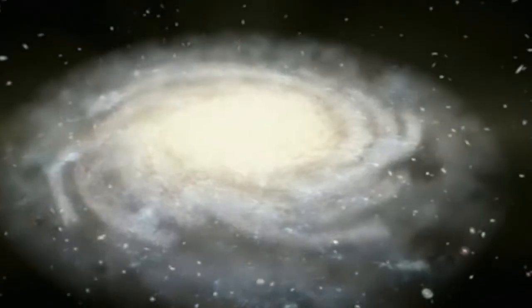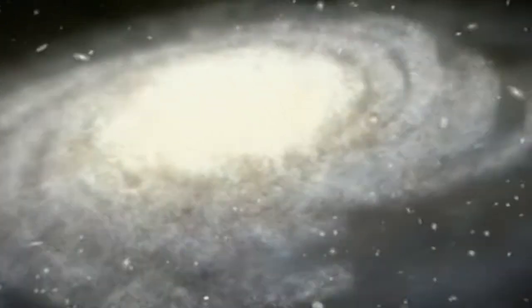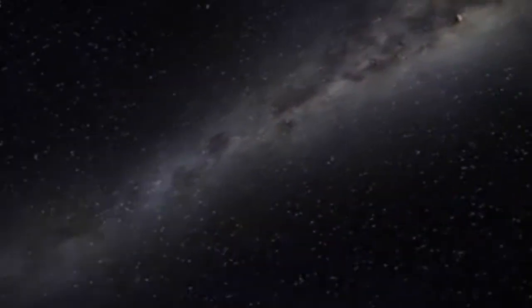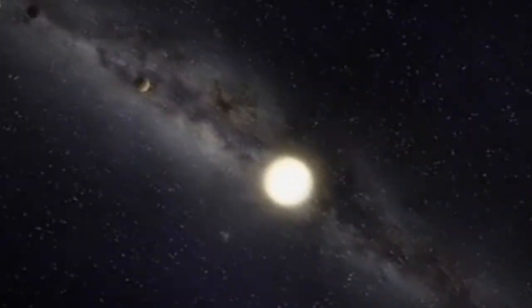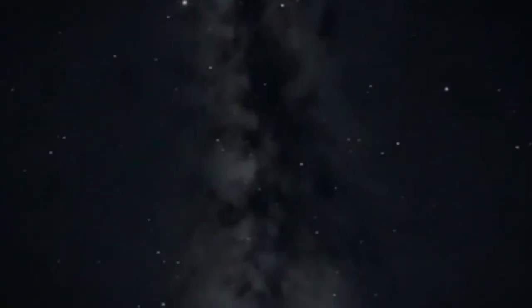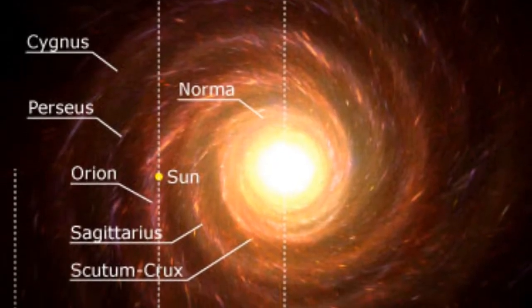Moving on to the main galactic disk — this is where the majority of the stars of our galaxy are located, including our solar system. The disk is home to the spiral arms of our galaxy, which are a major source of new star formation. It is believed that the Sun began its life somewhere within one of the spiral arms, and as it orbited the center of the galaxy, made its way outwards. We are currently at an age where our Sun exists between spiral arms — the major arm Perseus and the minor arm Orion.